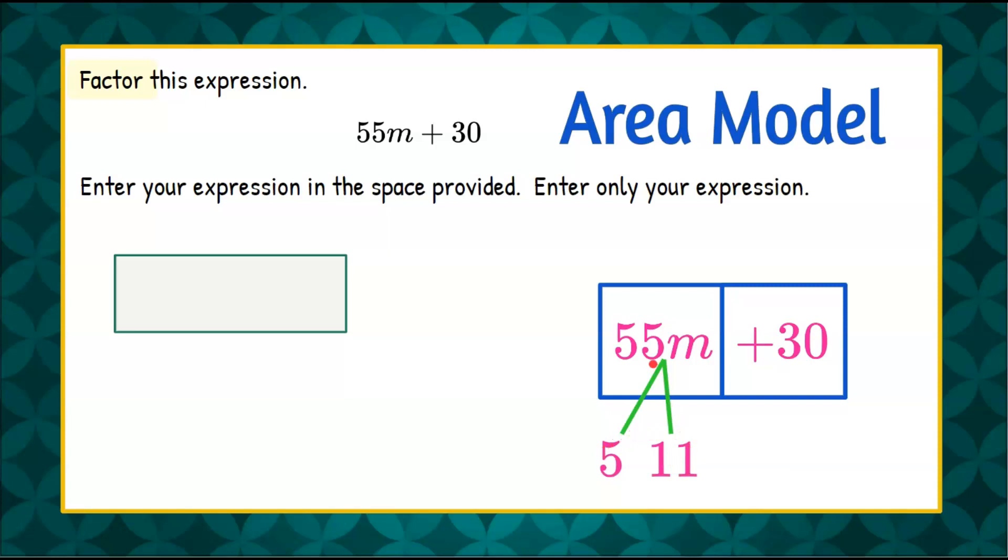5 times 11 is 55. They're both prime numbers so this is completely factored. And we do 5 times 11 times m.